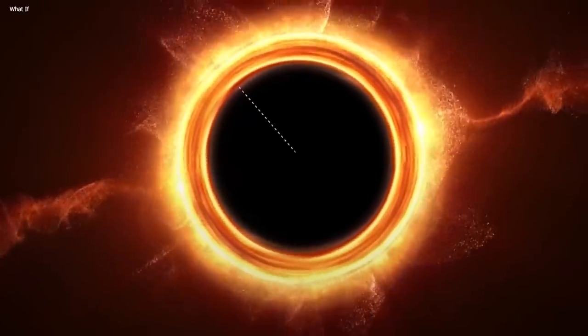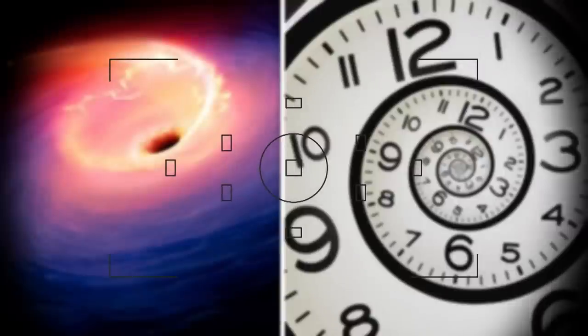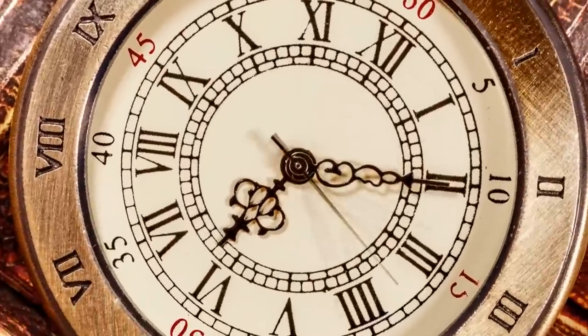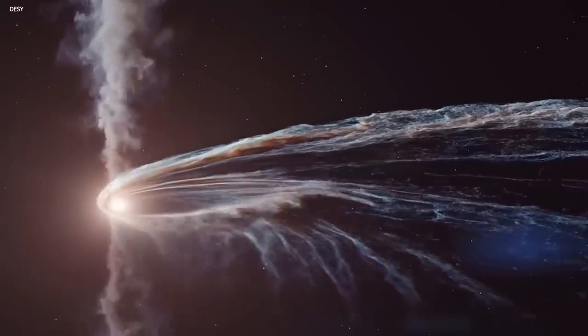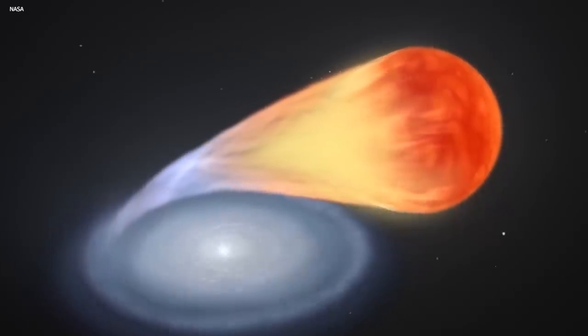And here's where things get really trippy: time itself starts playing tricks. From the perspective of someone far away, time appears to slow down near the event horizon. It's like the star's own clock ticks at a different pace compared to ours.